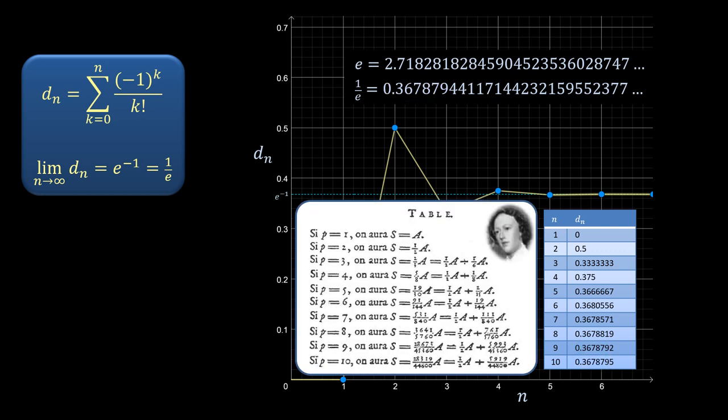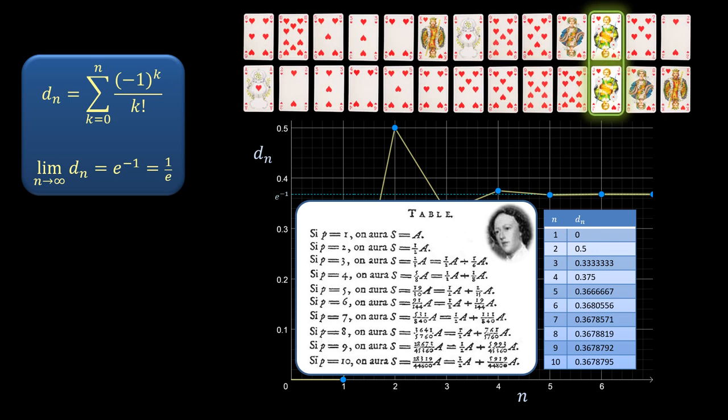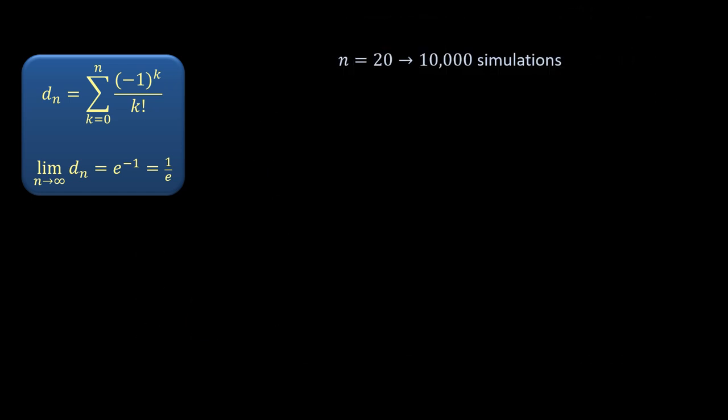Here is the equivalent of this table in de Montmort's book. He has counted non-derangements because non-derangements correspond to the definition of success in his game of treze, and writes his results in terms of exact fractions. He uses p instead of n for the set size, a is the number of permutations for given p, and s the number of non-derangements.